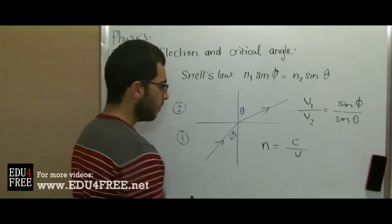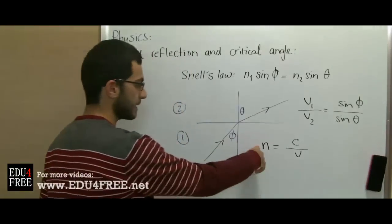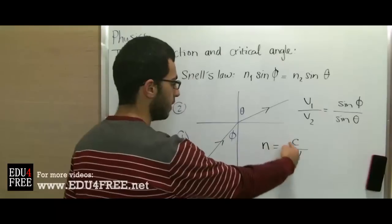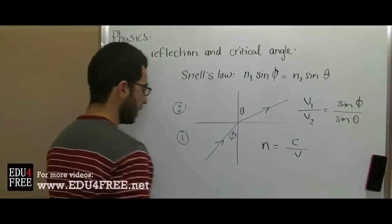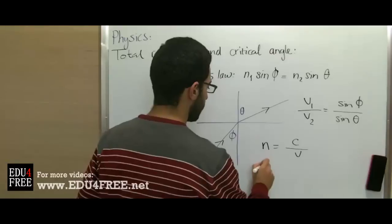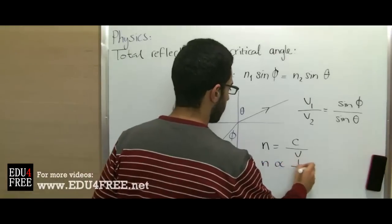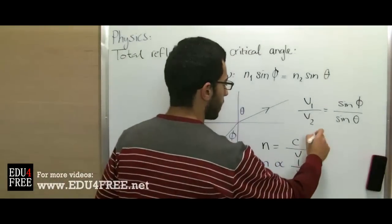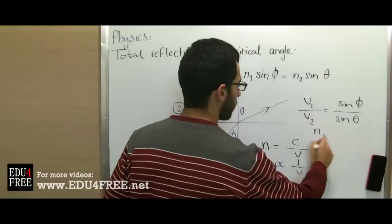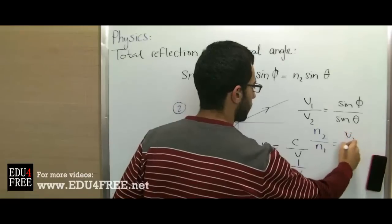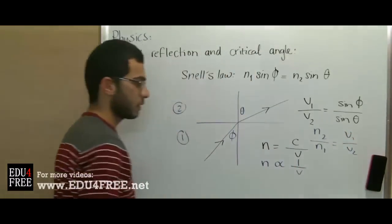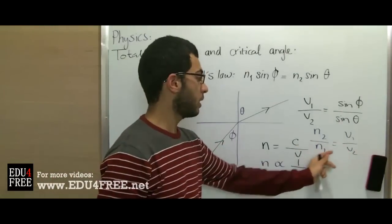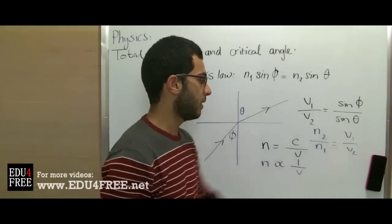The refractive index is inversely proportional to v because n equals c over v. From this relation, we can say that n2 over n1 equals v1 over v2 because they are inversely proportional. n2 is inversely proportional with v2 and n1 is inversely proportional with v1.